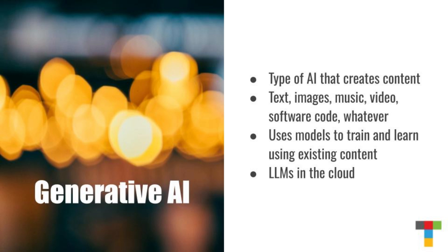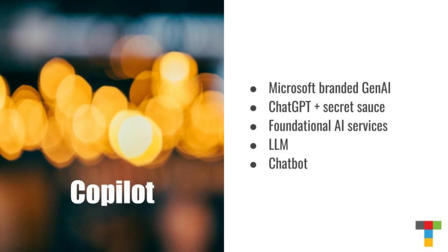The most famous example of generative AI right now is OpenAI's ChatGPT. And that brings me finally to Copilot, which is Microsoft's brand for its own in-house AI services. Microsoft Copilot could be seen as an underlying set of foundational AI-based services. It's built on top of OpenAI's ChatGPT, with Microsoft adding its own secret sauce in the form of Bing search results and other information that they're not providing publicly. It is an LLM — a large language model — and it's also a chatbot, because it has a conversational text-based, and can be voice-based, interface.